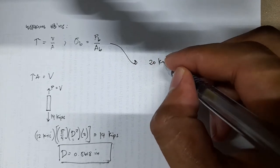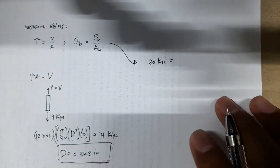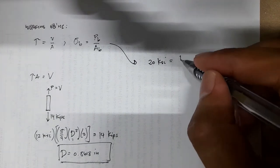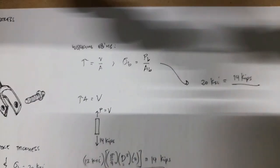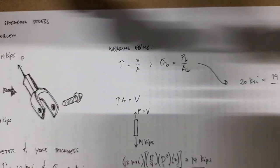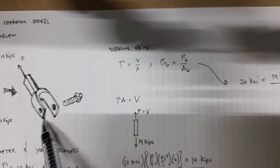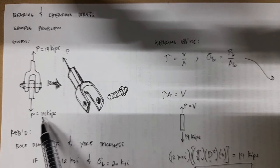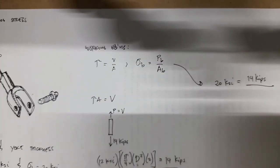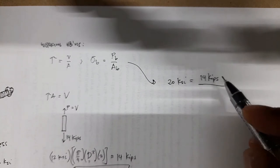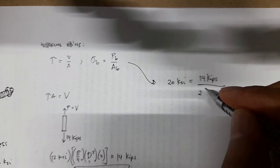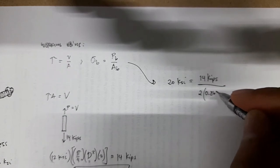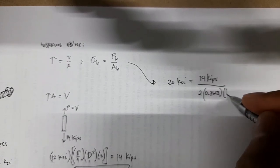For the bearing stress: sigma_b equals 20 ksi, and P_b equals 14 kips. In this particular case we also have two yokes for the same single loading P, so we have two bearing areas. The bearing area is two times (diameter times thickness), where diameter is 0.8618 inches and thickness is the unknown.